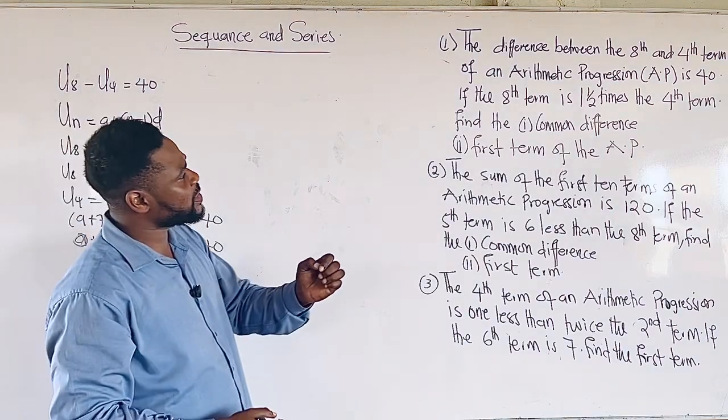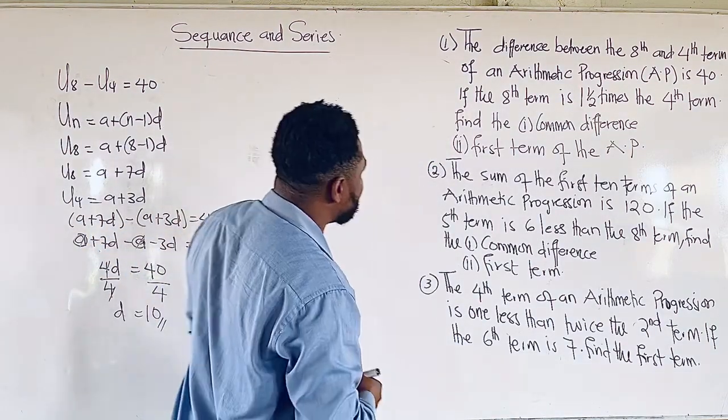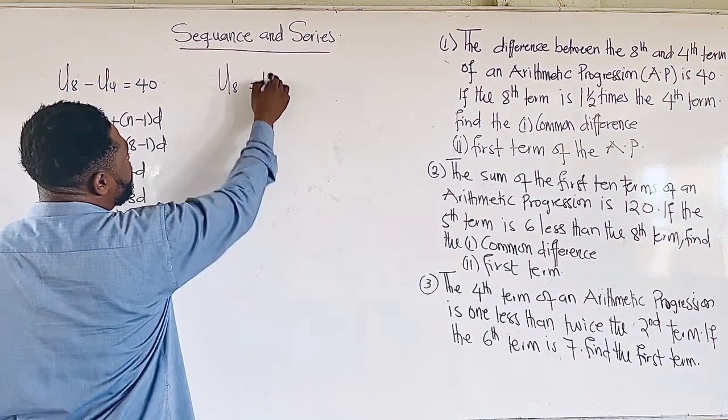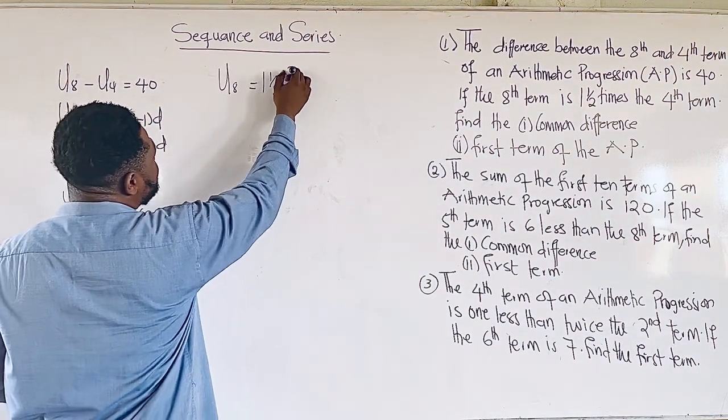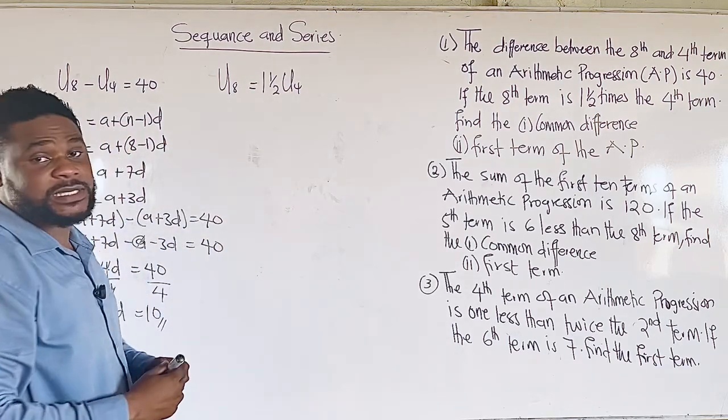Let us proceed. In the question, they said if the 8th term is one and a half times the 4th term. So our 8th term is 1½ multiplying the 4th term. This is how we can write it mathematically.